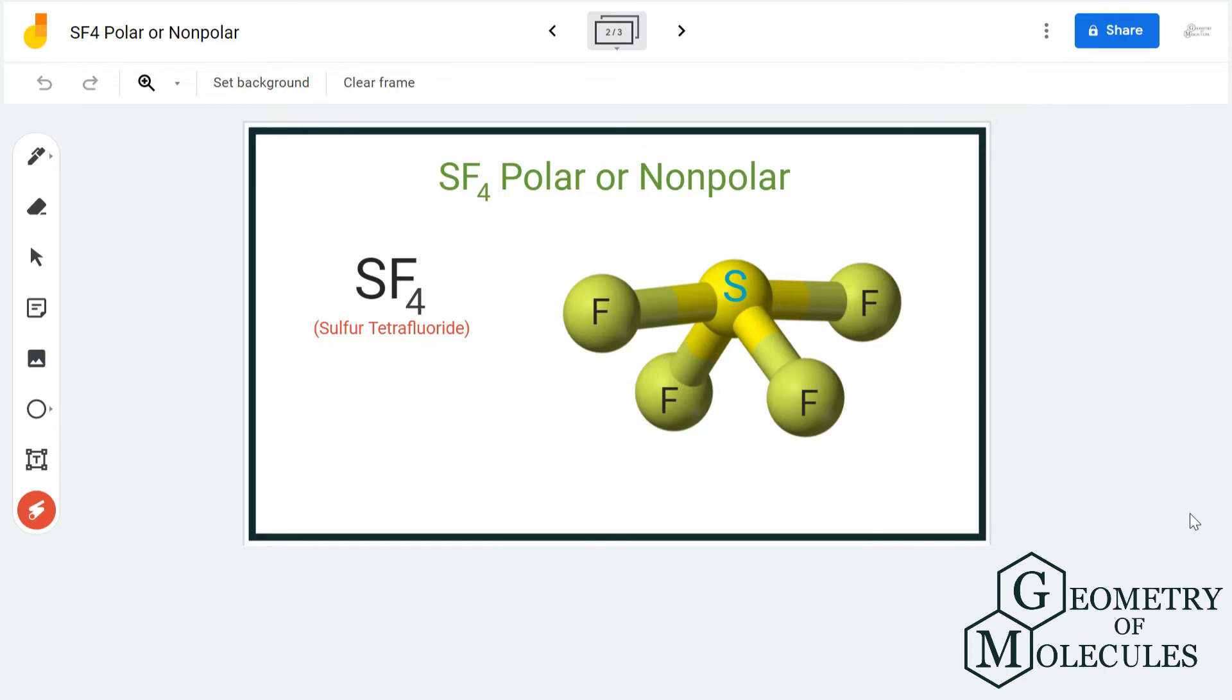So there will be a dipole moment between sulfur and fluorine. But the directions of the dipole moments of both these atoms, for this atom and for this atom, they'll cancel out each other's dipole moment because they are in the opposite directions. But when it comes to these two atoms, they cannot cancel out each other's dipole moments because they are pointing downwards.